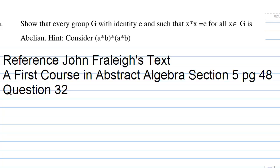We are going to show that every group G with identity element e such that x times x equals e for all x in G is Abelian. That is, ab equals ba when we say that a group is abelian for every a and b in G.